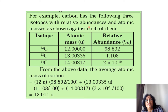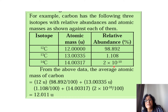For example, carbon has three isotopes with the following relative abundances and atomic masses: carbon-12 has atomic mass 12 U and relative abundance 98.892%; carbon-13 has atomic mass 13.00335 U and abundance 1.108%; carbon-14 has atomic mass 14.00317 U and abundance 2 × 10⁻¹⁰. From this data, the average atomic mass is calculated by multiplying each atomic mass by its relative abundance and dividing by 100, giving 12.011 U.